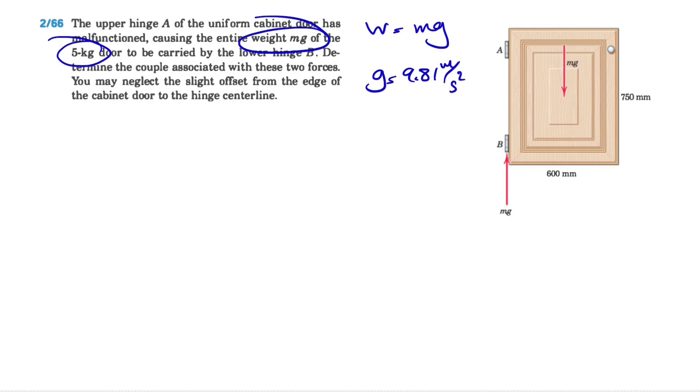We need to determine the couple associated with these two forces. We have a note at the end of this question that we may neglect the slight offset from the edge of the cabinet door to the hinge centerline. The reason is that realistically if the angle is too much, we're going to see the door turning something like this.